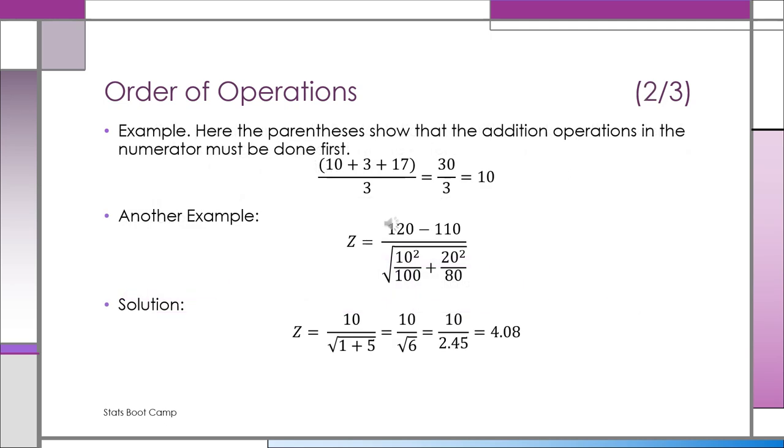The example at the top here is a very simple example of what we're talking about with order of operations. We know if we take an average, we want to add all the numbers up first and then divide by three if we have three numbers. So in this case, 10 plus 3 plus 17 divided by 3 comes out to 10. 30 over 3 is 10. We know we want to add up all the numbers of the numerator first because we have to do the parentheses first.